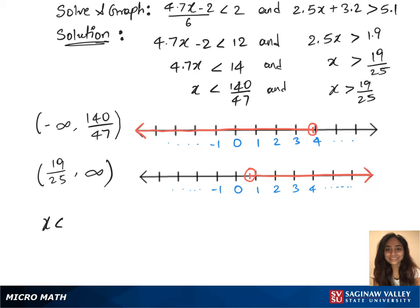Now we see the intersection between those two graphs which is X less than 140 over 47 and X greater than 19 over 25. We have the solution set here which is 19 over 25 comma 140 over 47. We'll plot this on the graph.